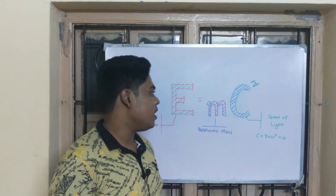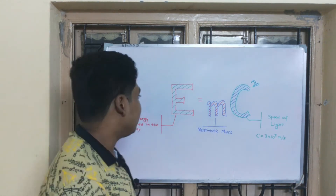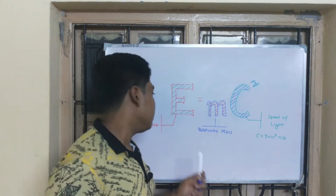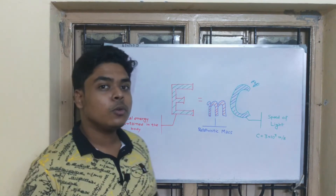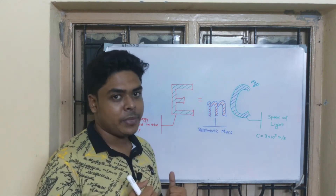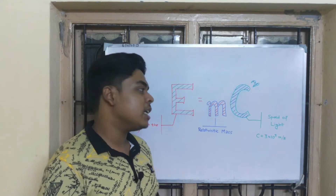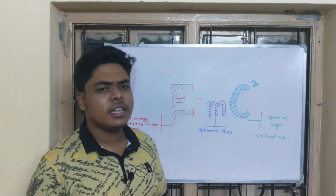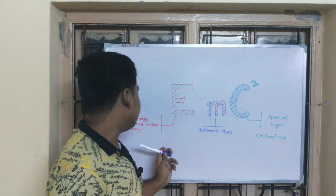So let's see — E = mc². E is the energy. Energy means the total energy content in the body, meaning how much energy is contained. You can say this applies to a body or a particle — that will be the total energy content of your body or particle.